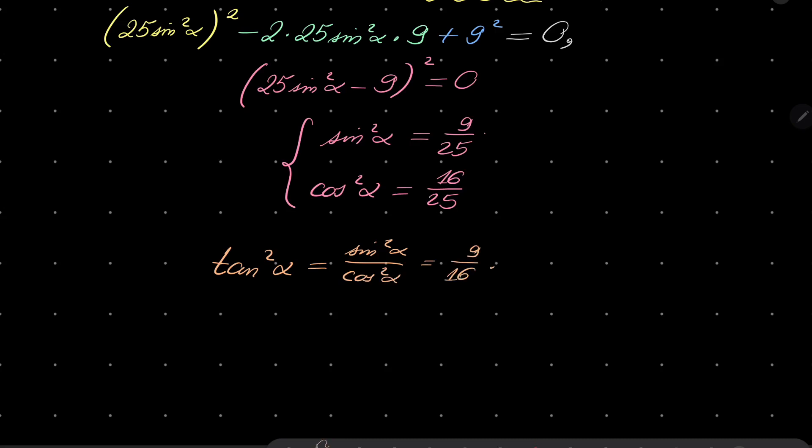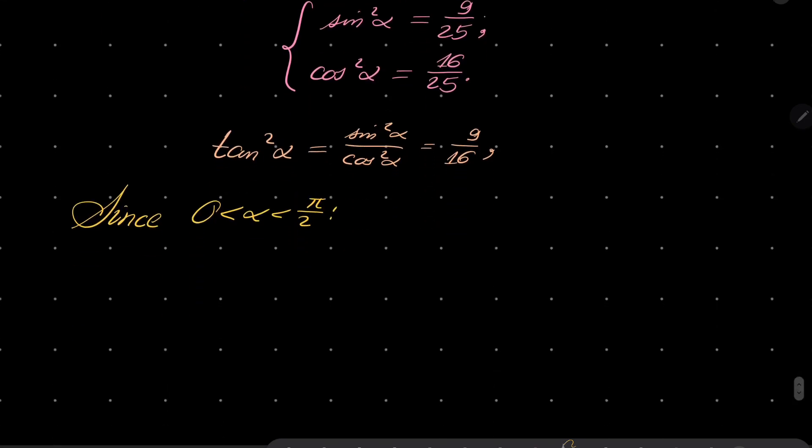And now we will use finally the fact that our angle is acute. Since alpha is between 0 and pi over 2, we know that we can take the square root and we get tangent of alpha equals 3 over 4.